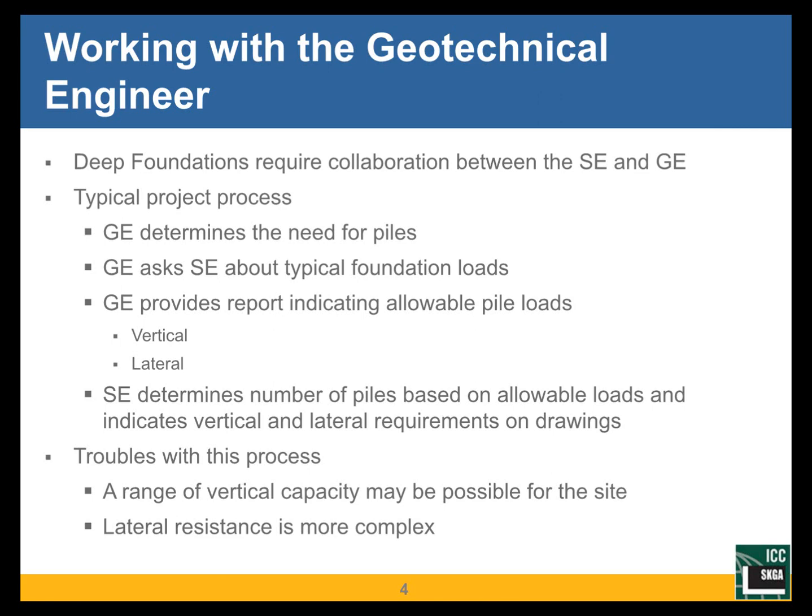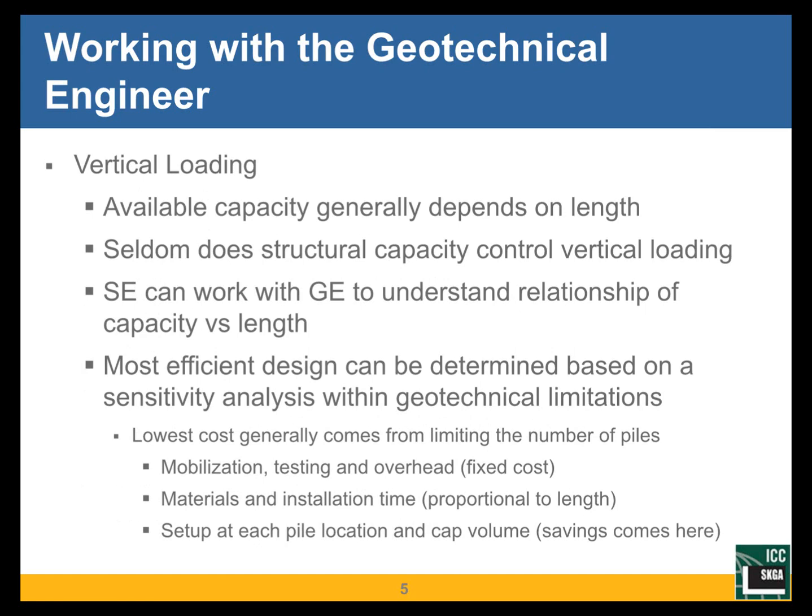Essentially in a vacuum, the report says: here's the vertical capacity, here's the lateral capacity. And then, treating the report basically as a bible, the structural engineer determines the number of piles based upon the allowable loads. Or if it's going to be a design-build project, they may indicate the vertical nominal load requirements on the drawings. The problem here is that there is often a range of vertical capacity that might be possible for the site, and using the maximum capacity that the geotechnical engineer provides may not necessarily be the most efficient approach. The resistance to lateral loading is really a lot more complicated than just how much shear you can get per pile.